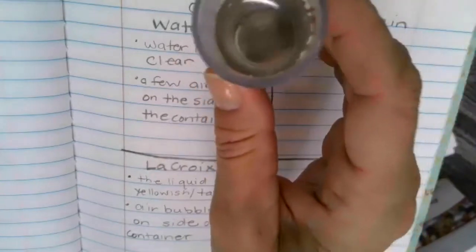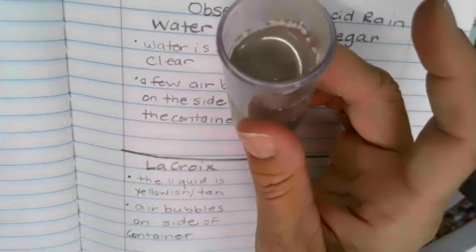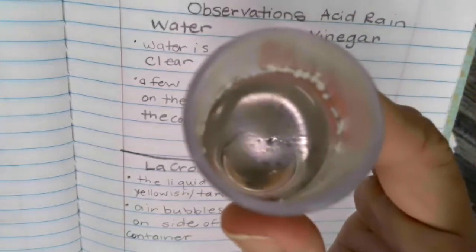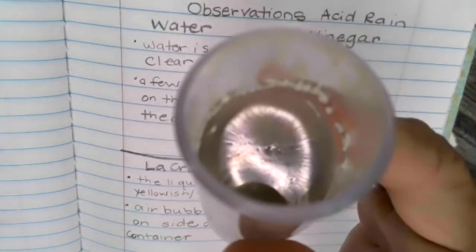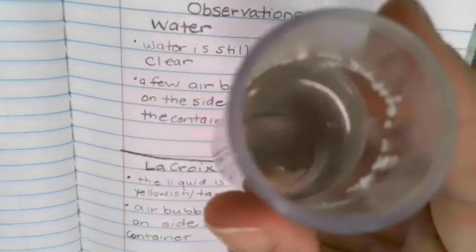Now I'm going to show you the vinegar. Look at what happened to the one with vinegar. First of all it's a different color. Second of all look at what has formed on the side of the container. Do you see those white crystals? Do you see the white crystals?